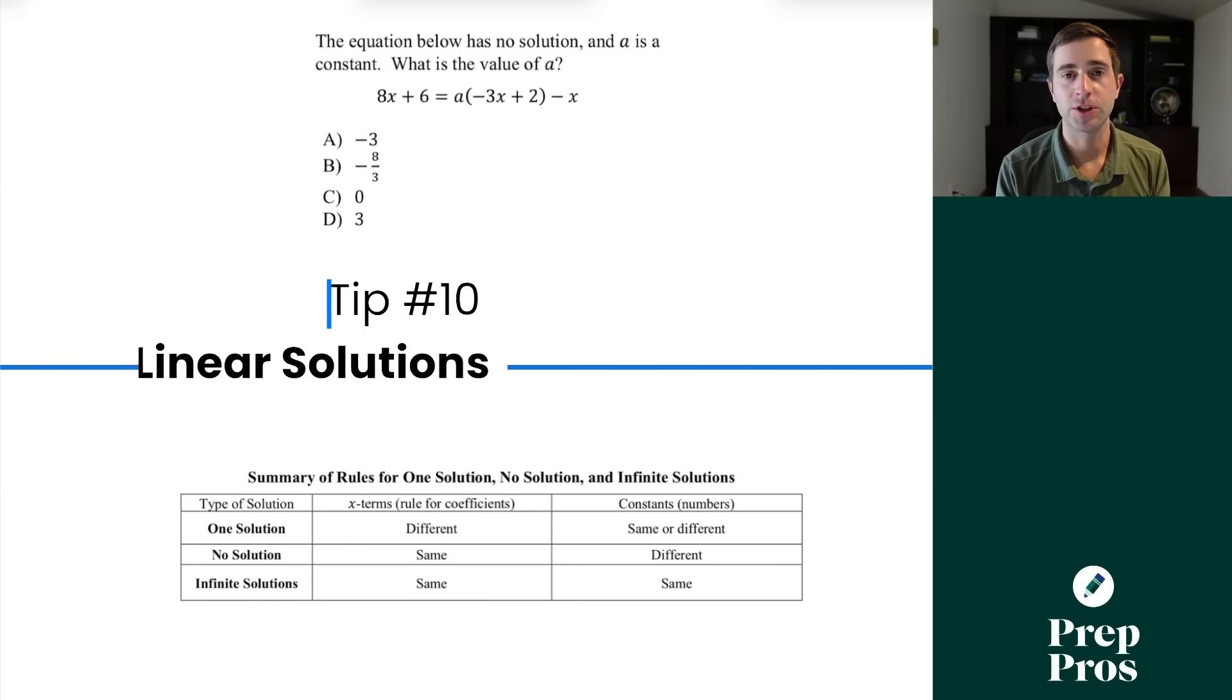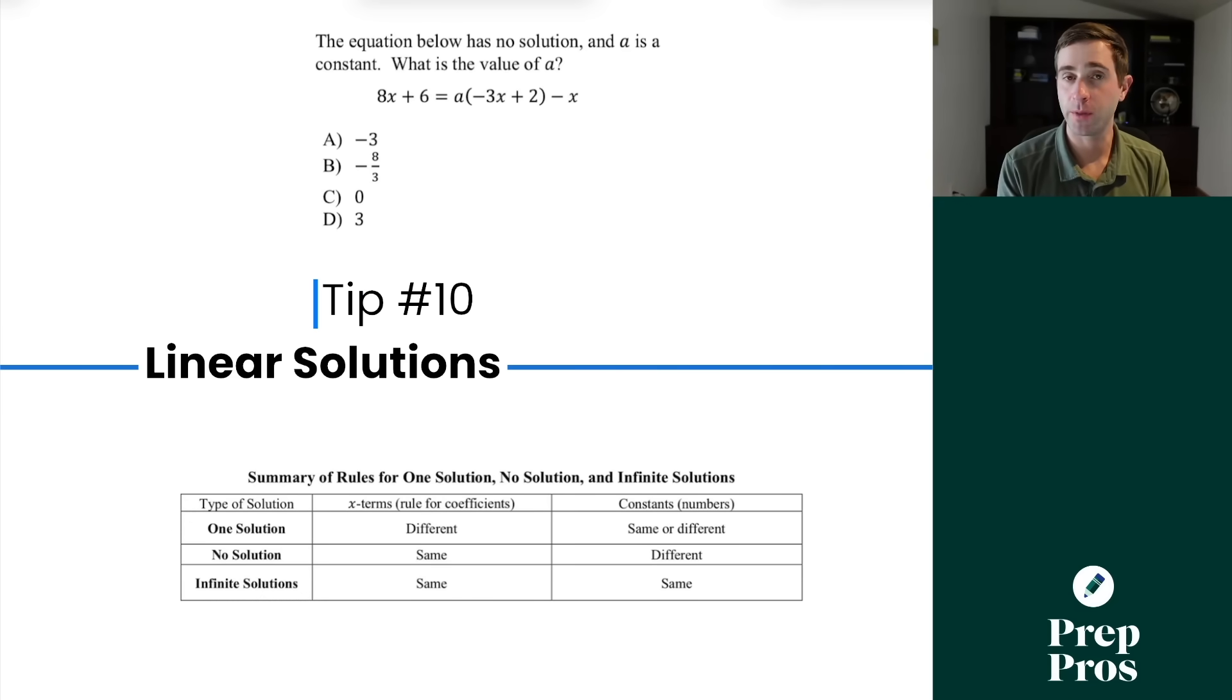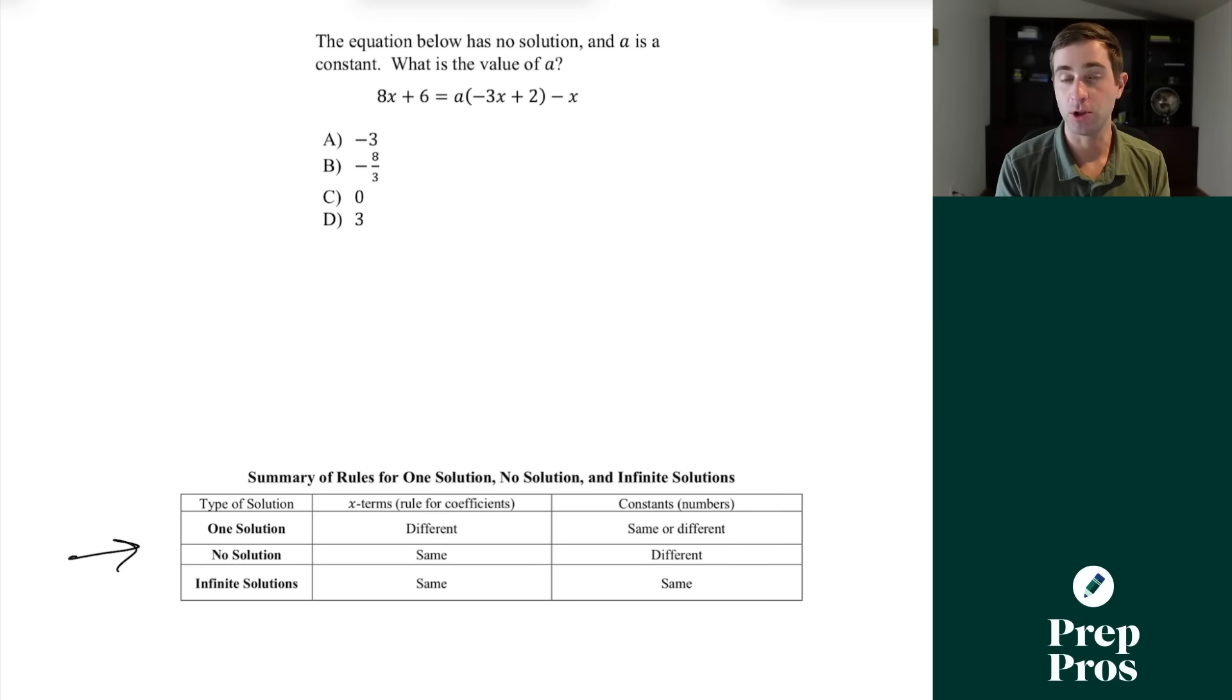The other type of solution questions is with linear equations. And there's kind of a few different ways we can think about this. So this is kind of a box from our book, which breaks down the rules. And I'm also going to write a few situations out so it's easier to follow. But essentially one solution, it means your x terms are going to have different coefficients. If you like to think about these graphically, that means they're going to have a different slope. If they're going to have a different slope, they're going to cross paths in some way. If we have no solutions, we're going to have the same x terms, or we can think of it as our slopes are the same, but our intercepts are different. So we're going to have parallel lines. If we have infinite solutions, it means everything's going to be the same.